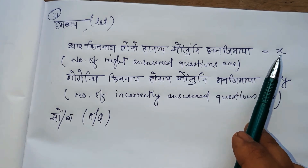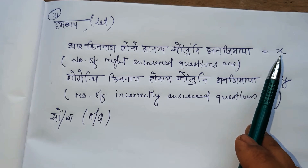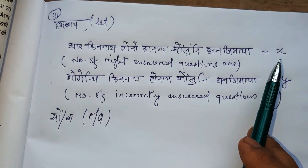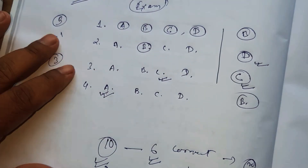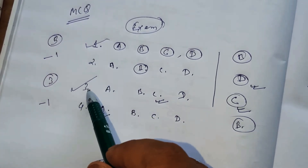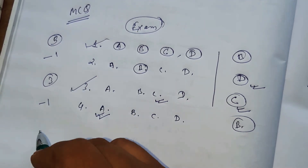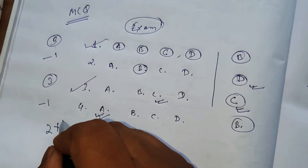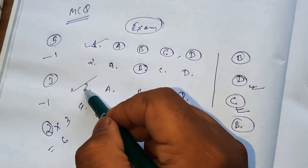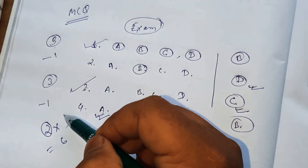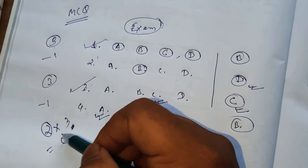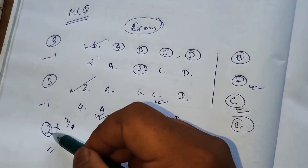For the second condition: 4 marks for each correct answer and minus 2 marks for each wrong answer gives 50. So x can be correct answers, and the second equation is 4x minus 2y equals 50.